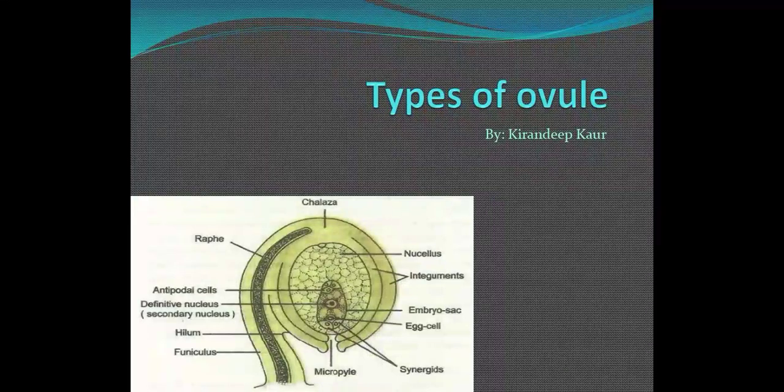Hello and welcome to Grad School, this is Kiran. So far we have studied microsporogenesis, megasporogenesis, development of female gametophyte — that is, formation of embryo sac — and the structure of pollen grain and some of the basics of parts of a flower.